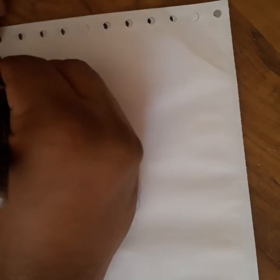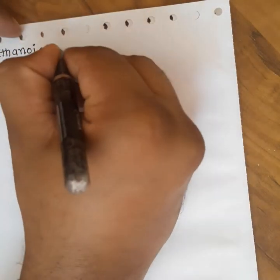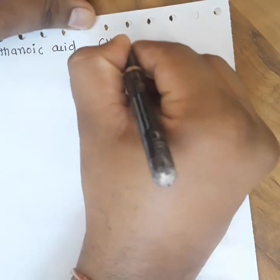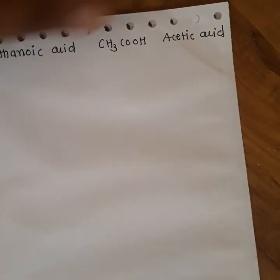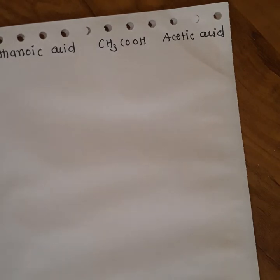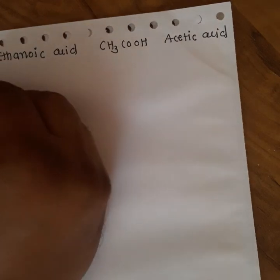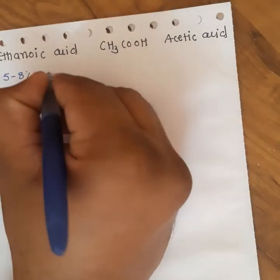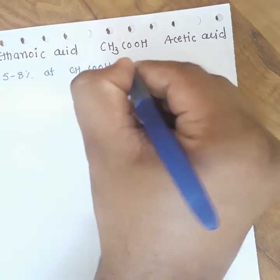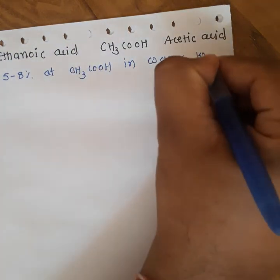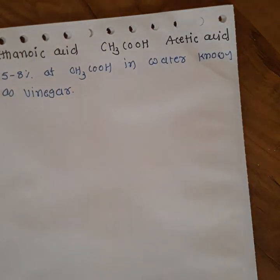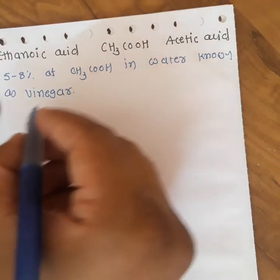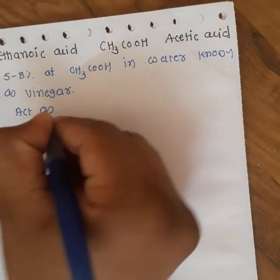After ethanol, the second important carbon compound in our syllabus is ethanoic acid. It has the formula CH₃COOH. It is also known as acetic acid. A 5–8% solution of acetic acid in water is known as vinegar, which is normally used in the preparation of Chinese food and is also a widespread preservative for pickles.